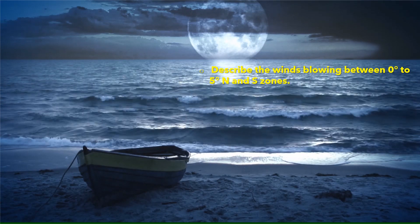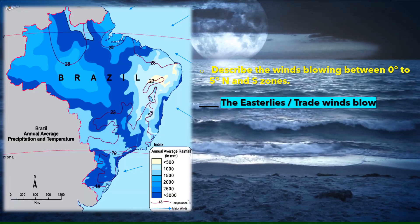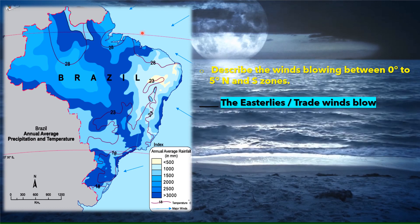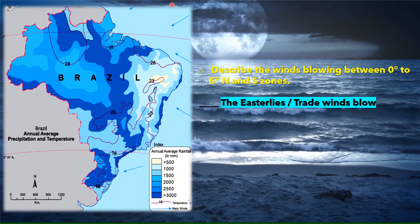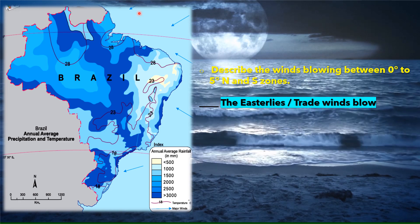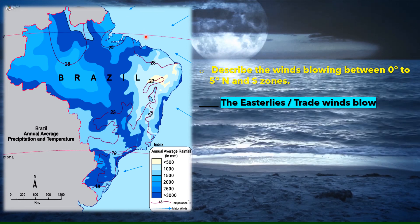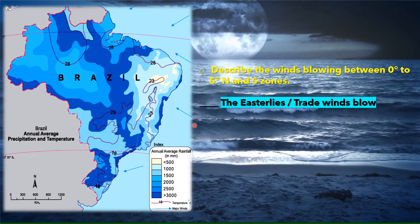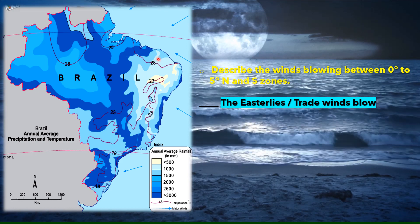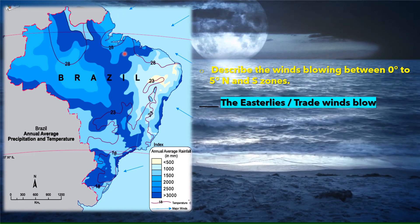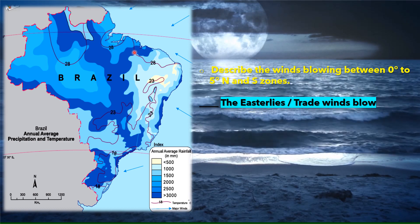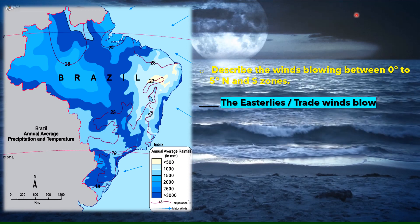Describing the winds between 0° and 5° north and 0° and 5° south: above the equator in the northern hemisphere we have the north trade winds, which get deflected to the right and blow in the northeast direction. Below the equator in the southern hemisphere we have the south trade winds, which get deflected to the left and blow in the southeast direction. Since both blow from the east, they are called easterlies or trade winds.